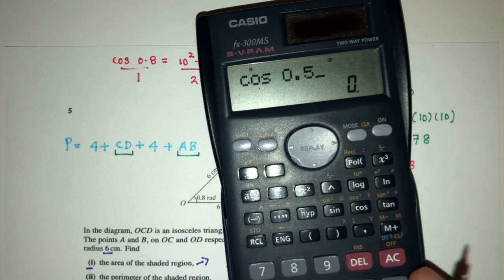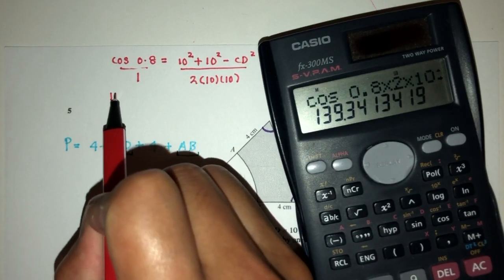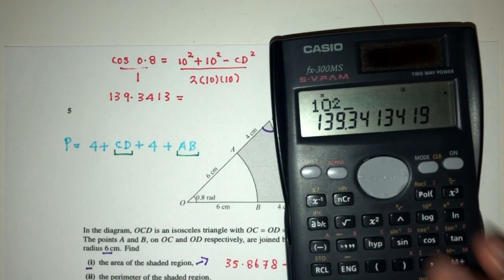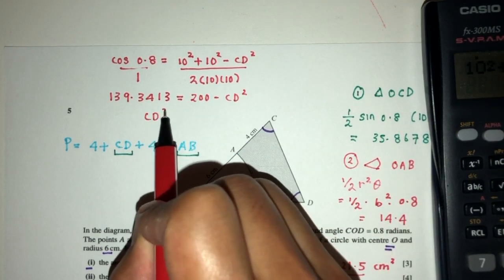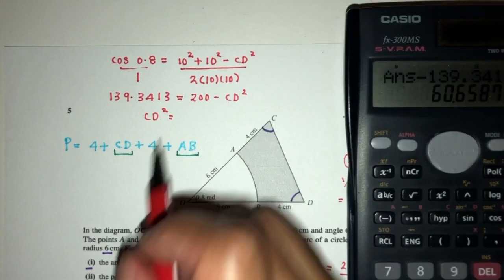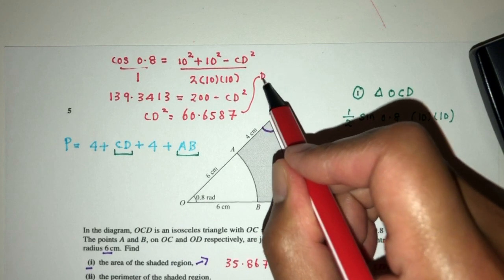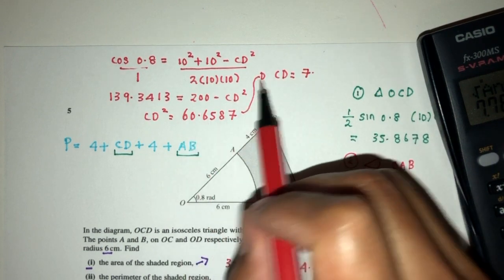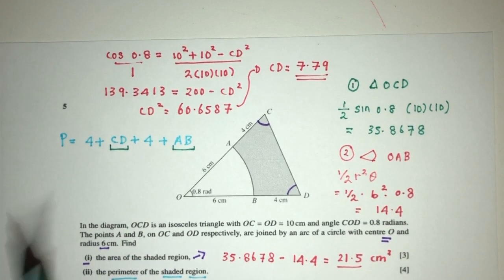So cos of 0.8 times 2 times 10 times 10, that will be 139.3413. So 10 squared plus 10 squared, that will be 200 minus CD squared. CD squared will be 200 minus 139.3413, that will be 60.6587. So from here, we can find the value of CD. CD will be square root of that value, that will be 7.79 as required.